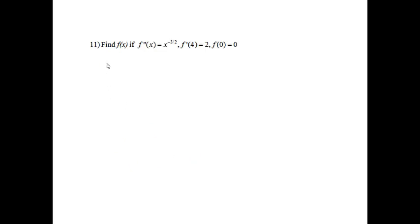Problem 11, find f of x if the second derivative is equal to x to the negative 3 halves, f prime of 4 equals 2, and f of 0 equals 0. Before I start this, let's point out that the 4 is an x, the 2 is a y, the 0 is an x, the 0 is a y.